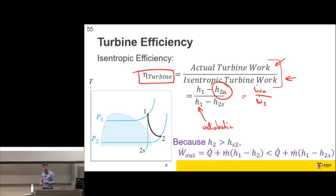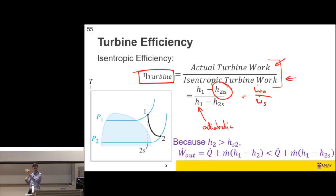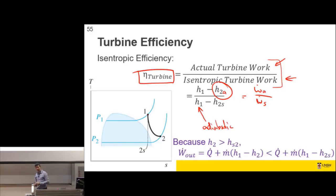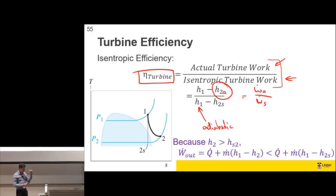The two typical problems are: given turbine efficiency, calculate h2_actual; or given h2_actual from measurements, calculate turbine efficiency. You might have measured turbine conditions and need to find efficiency, or been given a manufacturer specification to find the exit enthalpy and quality.